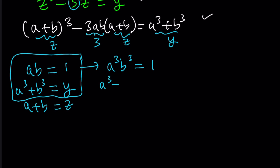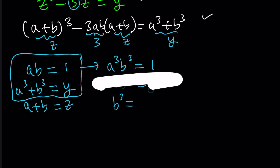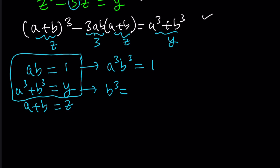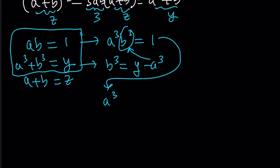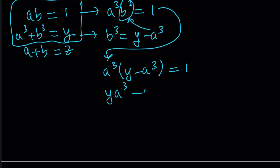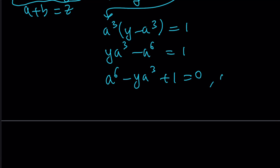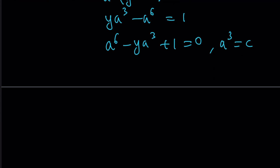The second equation stays the same. I can isolate b cubed as y minus a cubed and substitute it in. So a cubed times b cubed, which equals y minus a cubed, equals 1. Distributing: y times a cubed minus a to the 6th equals 1. Setting everything on one side: a to the 6th minus y times a cubed plus 1 equals 0. Now set a cubed equal to c, and this becomes a quadratic: c squared minus y times c plus 1 equals 0.